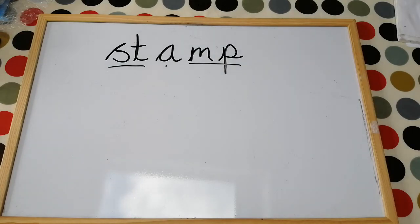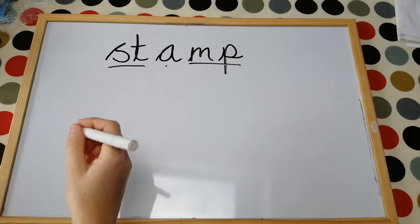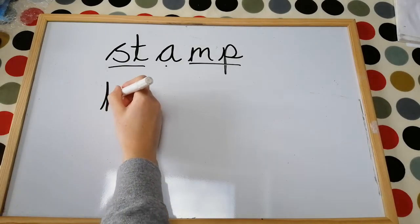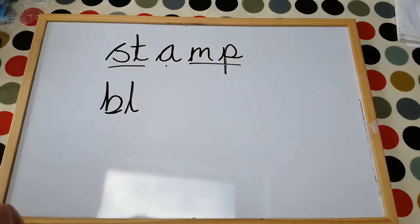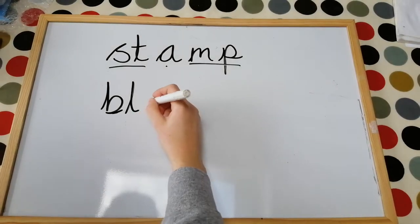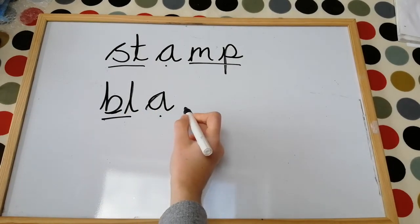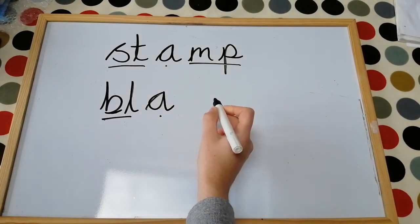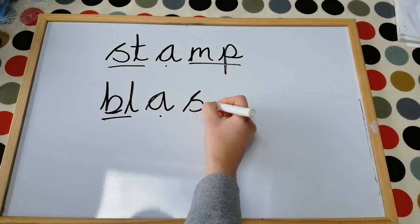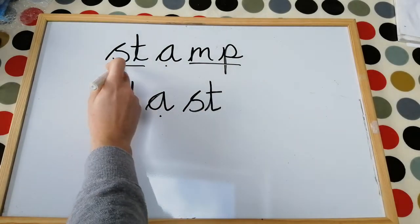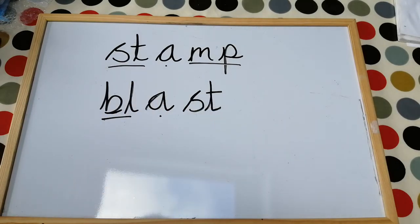Have a little think and try to hear what sounds make up that beginning blend: 'bl'. So we've got a 'b' and an 'l' — 'bl'. Then in the middle we have an 'ah' sound. And at the end, the blend we're going to have is 'st' — the same blend that we had at the beginning of the word 'stump', we're going to have at the end of 'blast'.